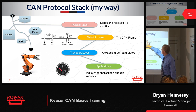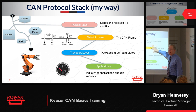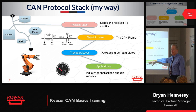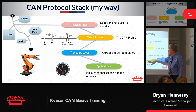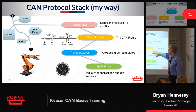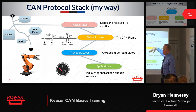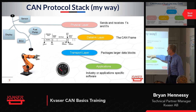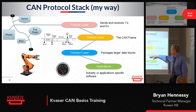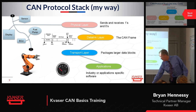CAN is really defined here — in the physical and data link layers. You can send J1939, CANopen, or NMEA 2000 over Ethernet, so those can be repackaged and sent over a different media. But this is where CAN is defined and used — in these two layers. These higher-level protocols are definitions that are communicated across different standards.